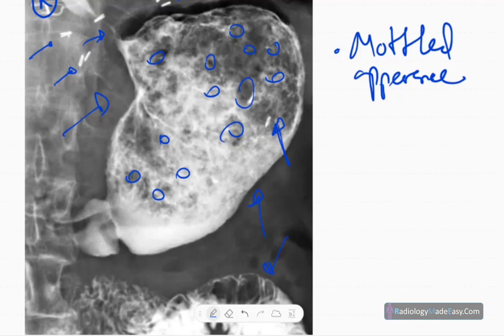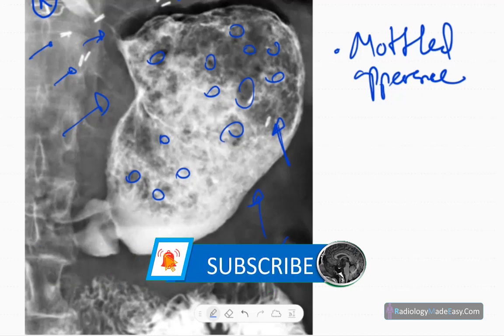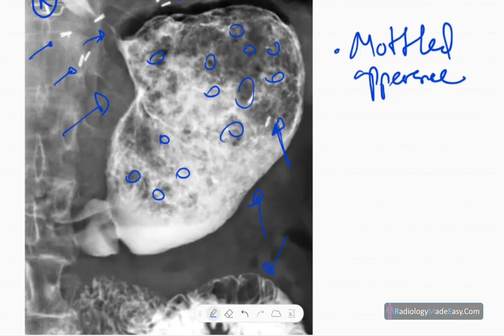When we talk about gastric bezoar, bezoar means the ingestion of undigested material into the GI tract. They retain within the stomach, they are not digested and there are a few types. One common type is trichobezoar, that means ingestion of hair by children, mainly seen in children. Another one is phytobezoar.